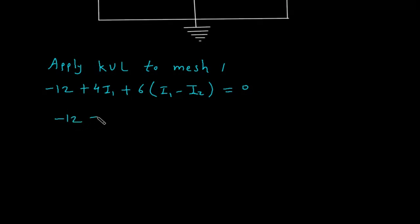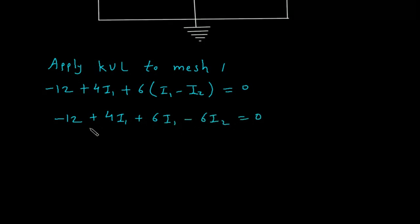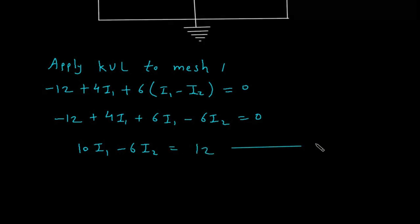This simplifies to minus 12 plus 4I1 plus 6I1 minus 6I2 equals 0, giving us 10I1 minus 6I2 equals 12. Let's call this equation number 1.